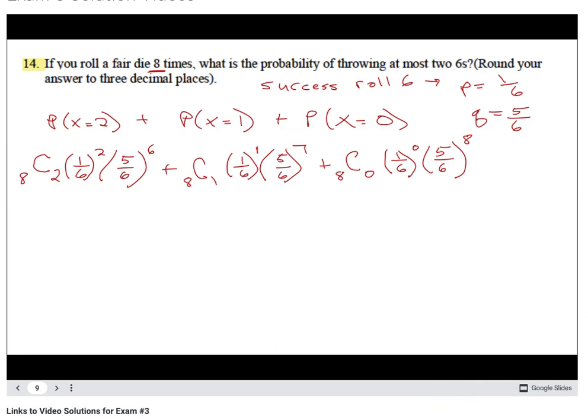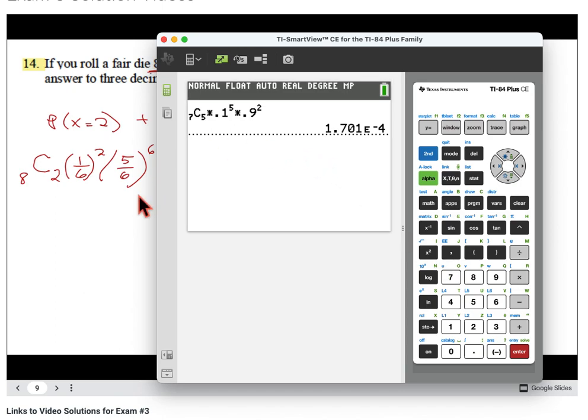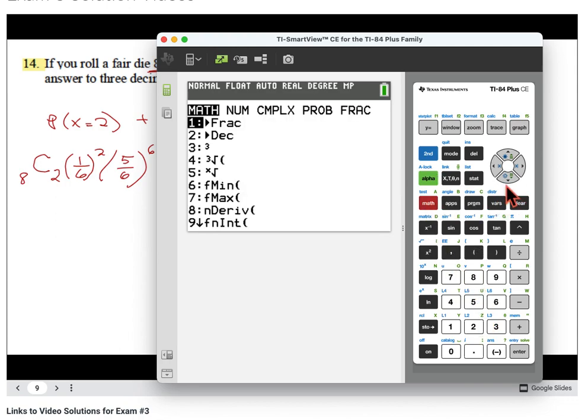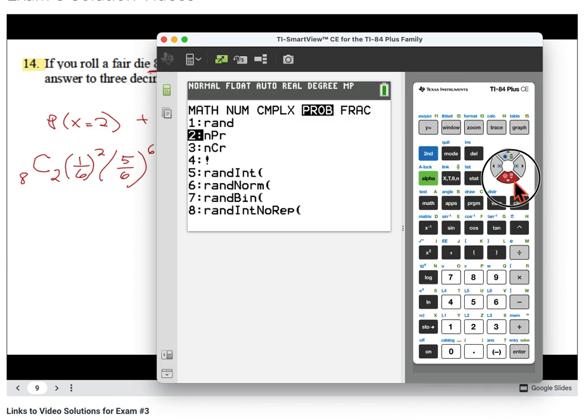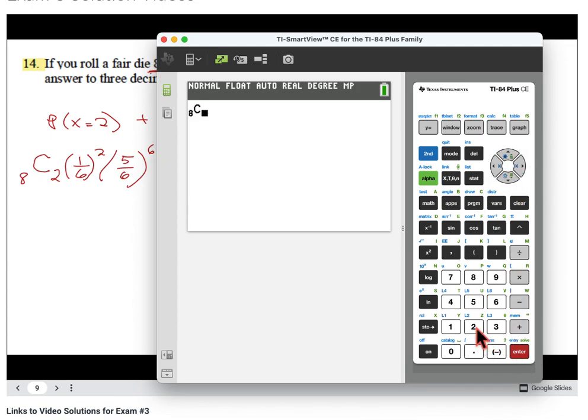Let's get our calculator out. We'll do the first one. So we do eight math probability NCR, and we're going to do eight choose two times - use of parentheses this time. It looks nice and better this way. And then we're going to multiply that by five divided by six, and we're going to raise that to the sixth power.